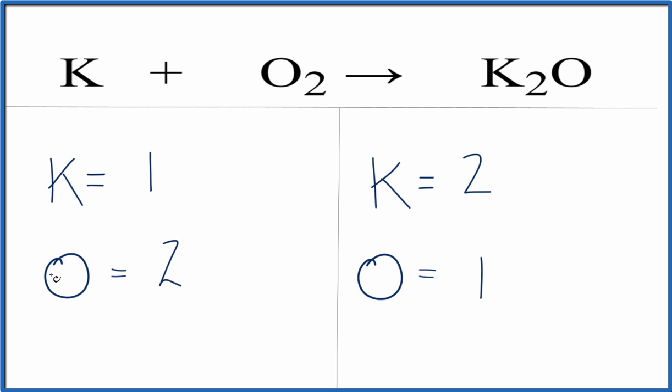Let's start by fixing the oxygen atoms. We have two here and one here. We could put a two in front of the potassium oxide. Now we have one oxygen times two, which gives us two oxygens, so the oxygens are balanced.